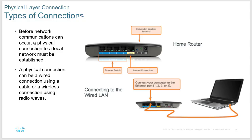Before network communications can occur, a physical connection to a local network must be established. Here we have a home router — the power goes in, this plug goes into ethernet, that's a routed port, and these are switch ports your PCs plug into. There has to be some kind of physical connection even if you're wireless. Years ago at a hospital going wireless, they didn't realize that even wireless access points need a physical connection — all that data cable has to be wired up in the ceiling.